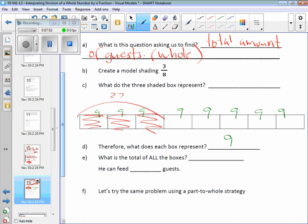Add up all the boxes and tell me what you get. Or, nine times eight. I was going to go with Lauren, but what do you got, Lauren? All right, 72. He can feed 72 guests.